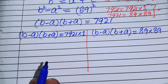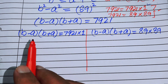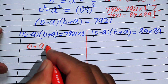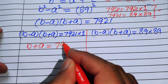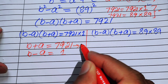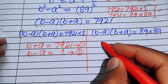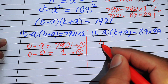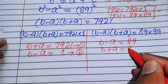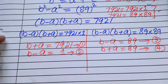For Case 1: we equate b + a = 7921 (equation 1) and b − a = 1 (equation 2). For Case 2: we equate b − a = 89 (equation 3) and b + a = 89 (equation 4).